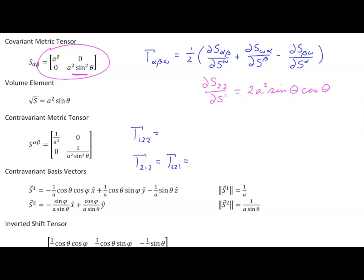For alpha equal to 1, the value is going to be this term with a negative sign times a half. That means gamma 1,2,2 is equal to negative a squared sine theta cosine theta. For the case where alpha is equal to 2 and beta is equal to 1, this is going to be a positive a squared sine theta cosine theta.